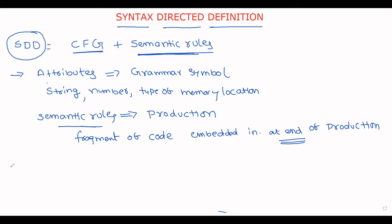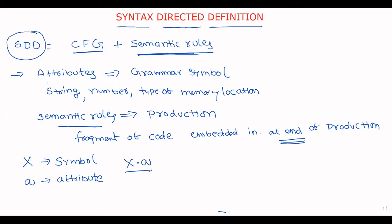To explain with an example: within a production, assume X is a symbol. That symbol X can consist of any number of attributes — assume A is one of its attributes. In the semantic production we represent this as X.A. What does X.A mean? X.A represents the value at node X; that is, for this symbol, if you provide the attribute it gives the value.